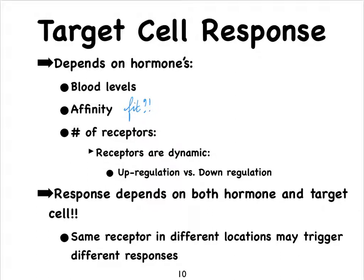It gets even more complicated because one and the same hormone, if it binds to target cell A, it's going to create response 1. But if that same hormone binds to target cell B, which is going to have the exact same receptors — otherwise this hormone couldn't fit into the receptor — we might see response 2, a whole different response. So the response depends on both the hormone and the target cell. You can't predict very easily what a hormone is going to do unless you are also familiar with where the target is located.